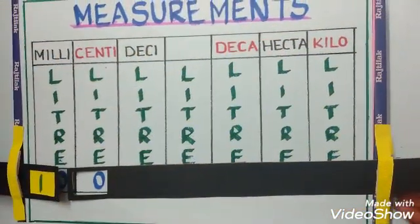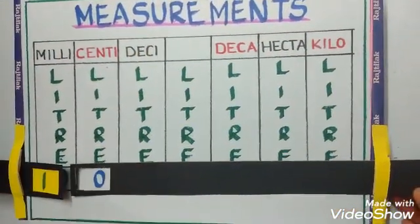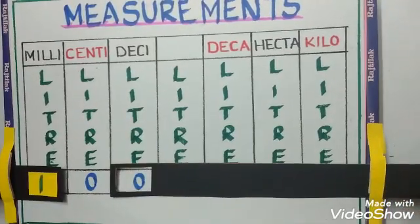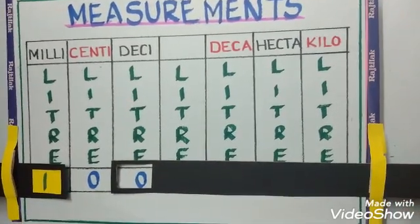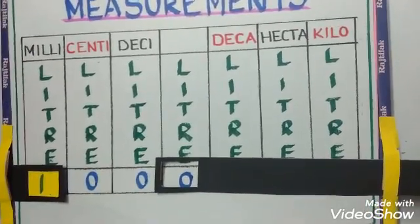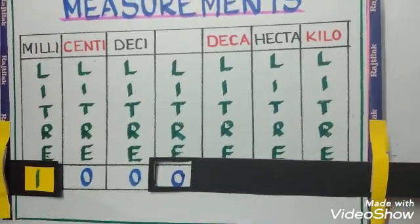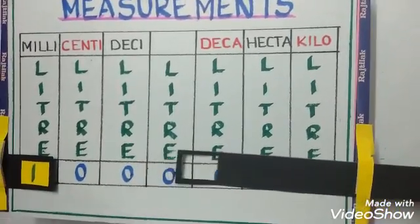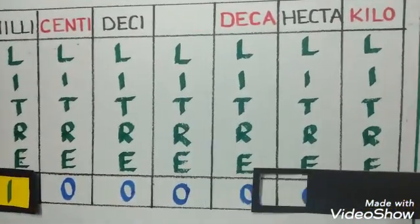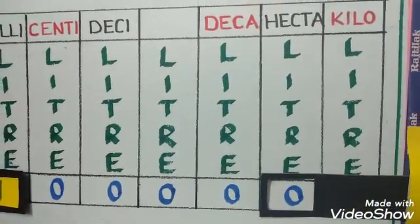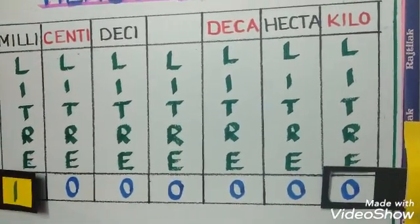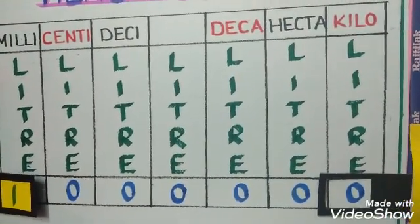Now 10 milliliters is equal to 1 centiliter. 100 milliliters is equal to 1 deciliter. 1000 milliliters is equal to 1 liter. 10,000 milliliters is equal to 1 decaliter. 1 lakh milliliters is equal to 1 hectoliter. 10 lakhs milliliters is equal to 1 kiloliter.